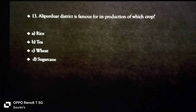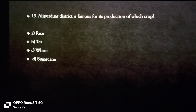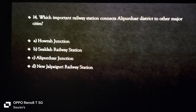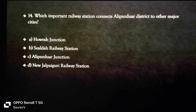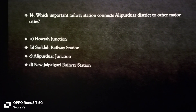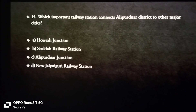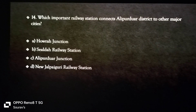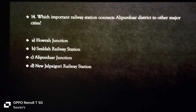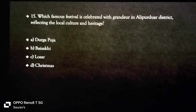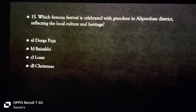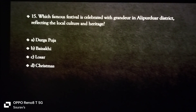Alipurduar district is famous for its production of which crop? The answer is tea. Which important railway station connects Alipurduar district to other major cities? Alipurduar Junction — option C. Which famous festival in Alipurduar district reflects local culture and heritage?